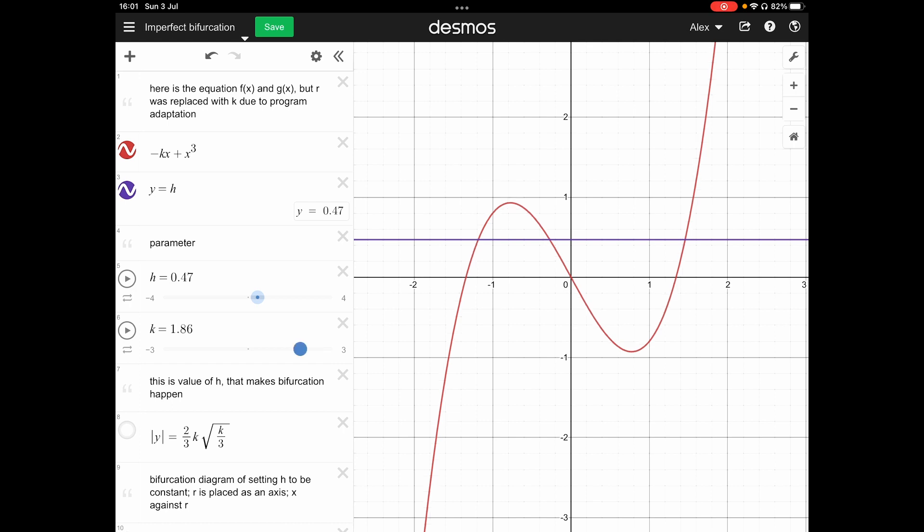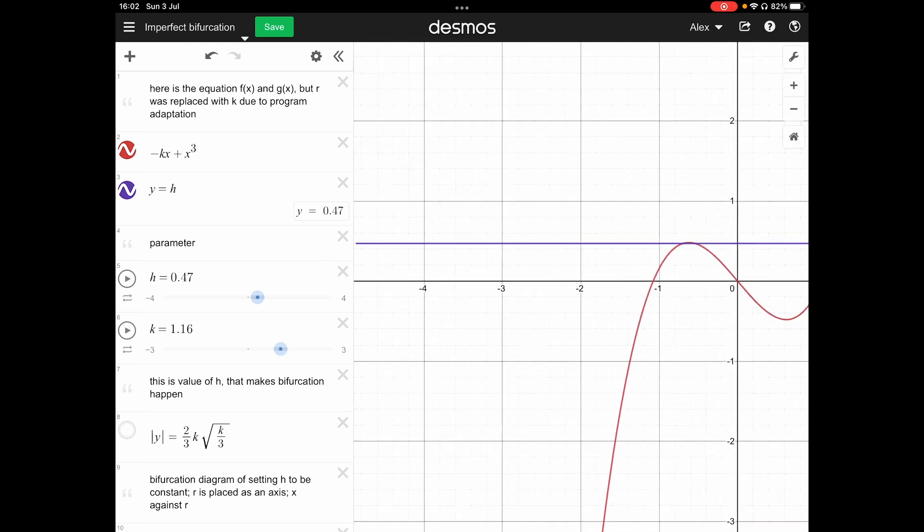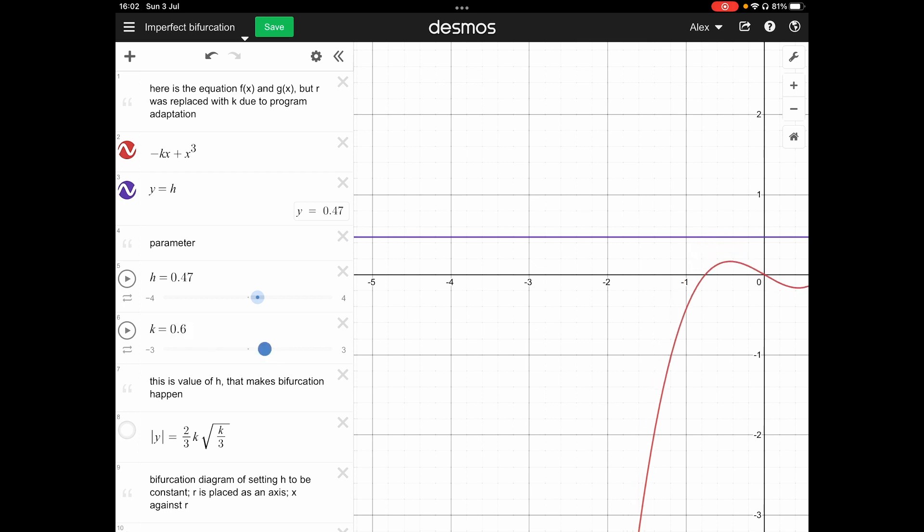then it becomes three points of the fixed point. When in the saddle, it's two points, then it's three points and further and further. If you just look at the left-hand side, if you hide the right-hand side, it will be like that.